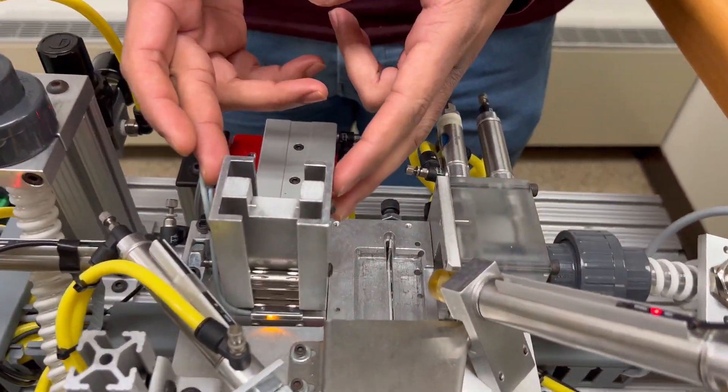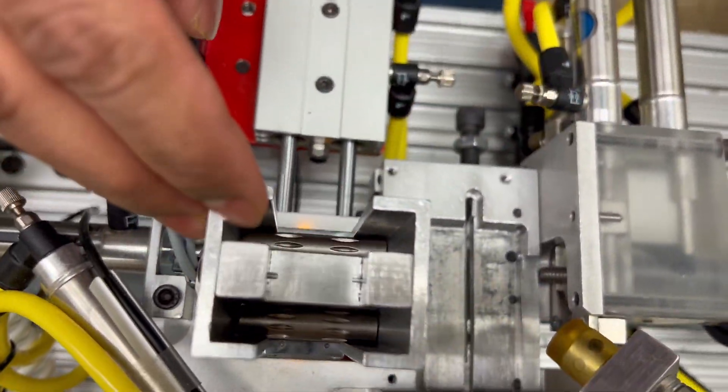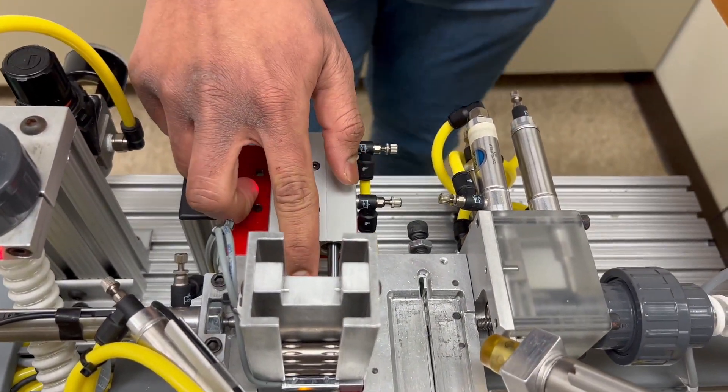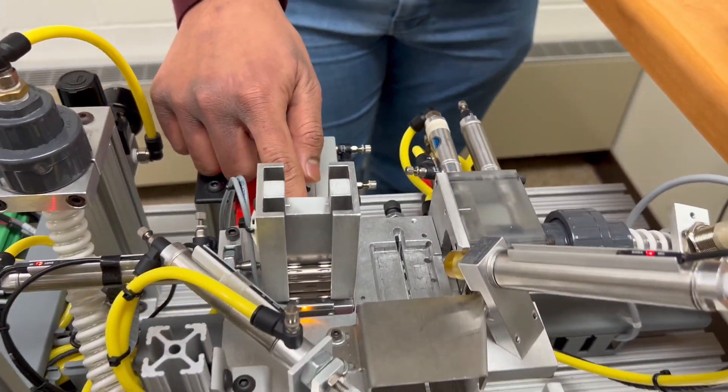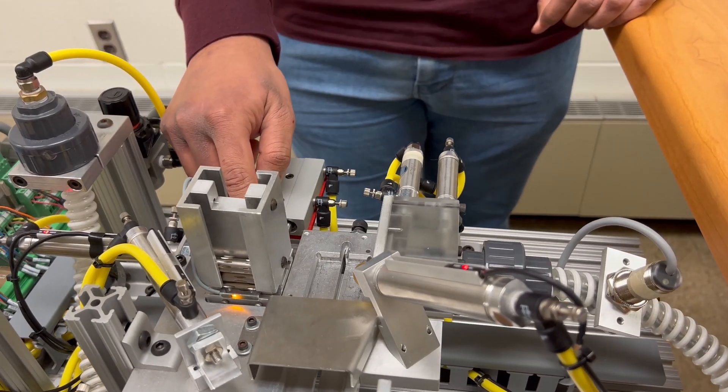Here we have the spool insertion station with two slots where the spools are placed. And we also have an inductive sensor at the bottom that is used to sense if the spools are present in the slots.